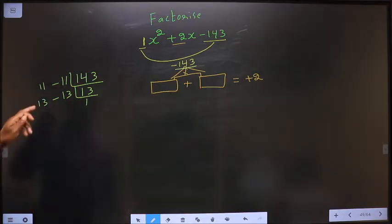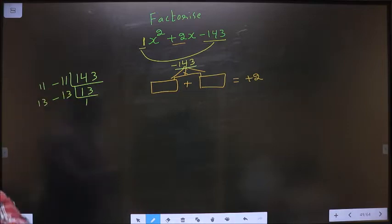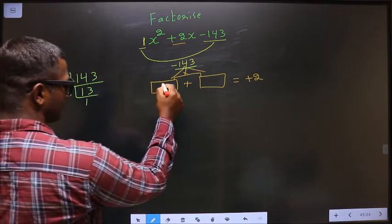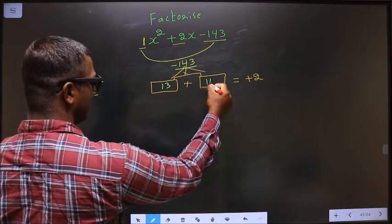See, 13 minus 11 is 2, 13 into 11 is 143. So 13 and 11.